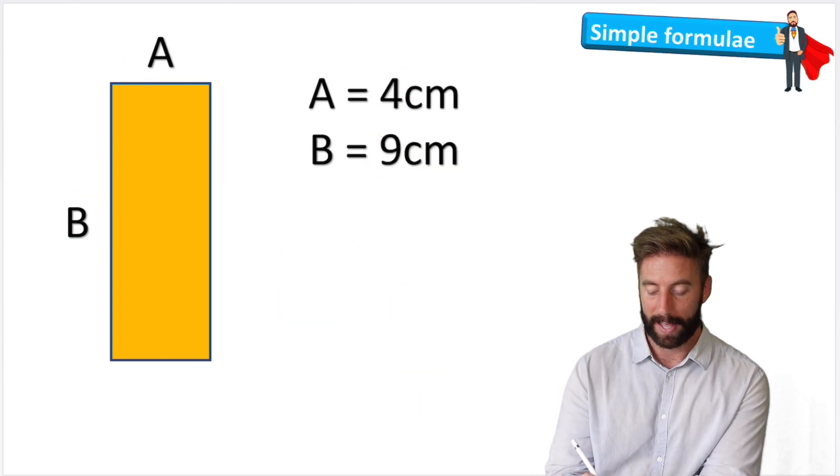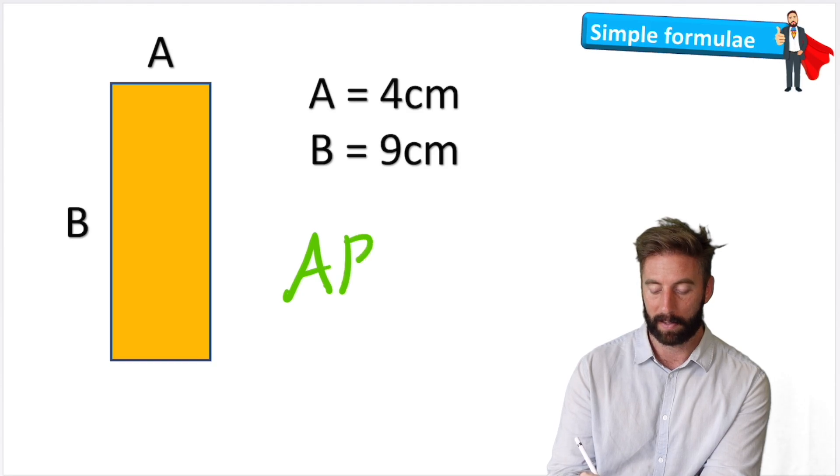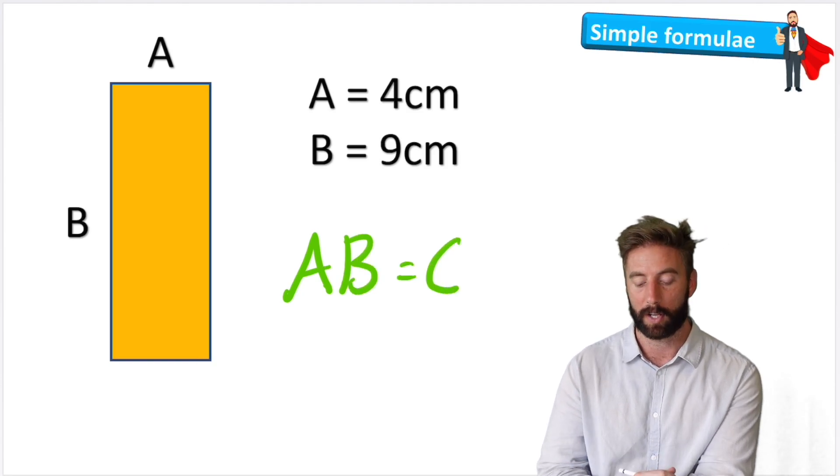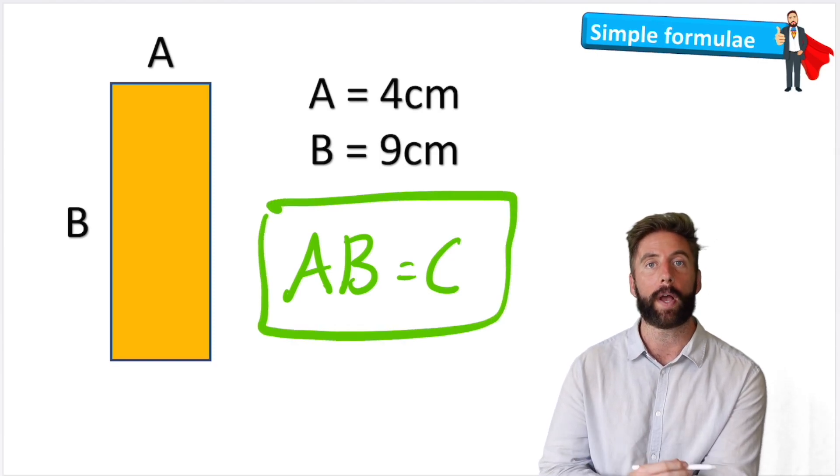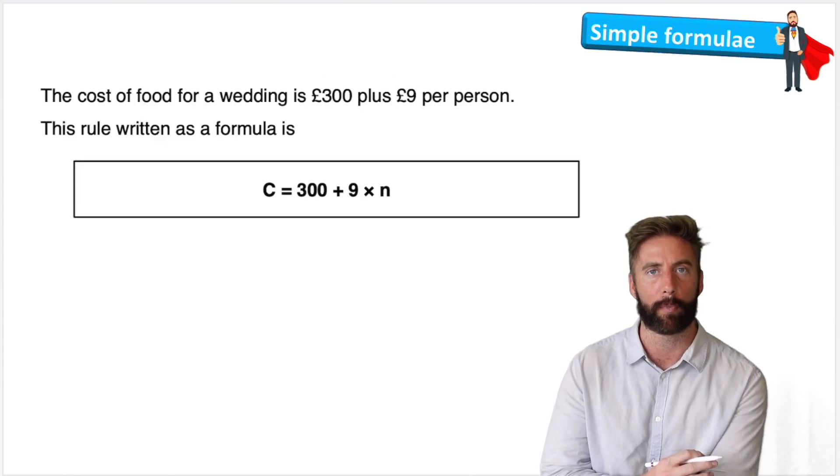So the formula AB equals C is very useful but very basic. But this formula will always work when finding the area of a rectangle.